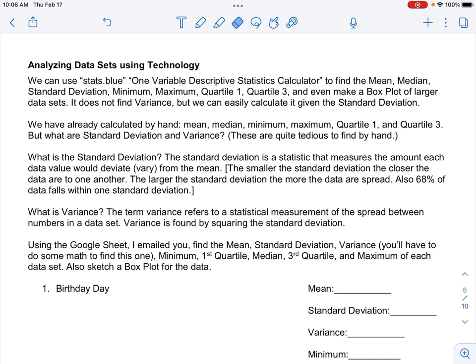And this doesn't find variance, but we can easily calculate it when we know the standard deviation. So we've already calculated by hand our mean, our median, our minimum, maximum, quartile 1, and quartile 3. But we don't know what standard deviation and variance are. These two things can be quite tedious to solve by hand.